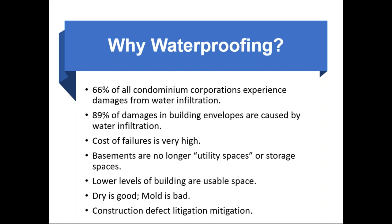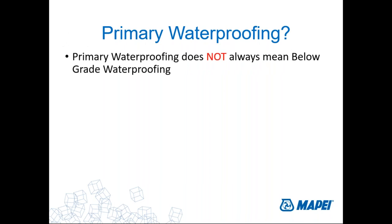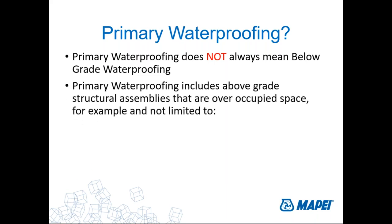In waterproofing — the title says below grade waterproofing as primary waterproofing — I just want to make sure I'm clear: primary waterproofing doesn't always mean below grade waterproofing. Primary waterproofing has everything to do with below grade structures, but also above grade structural assemblies, especially those over occupied spaces or spaces that you don't want water to enter. Examples include decks, balconies, and wet rooms that require waterproofing to prevent water intrusion into other areas of the building.